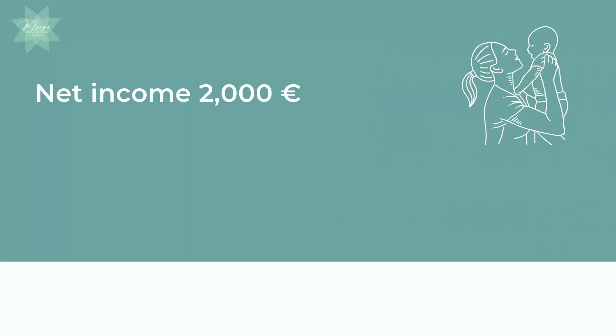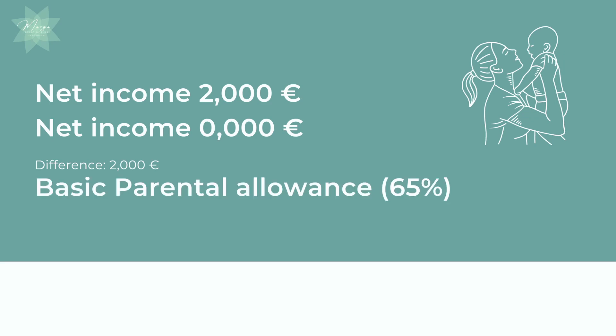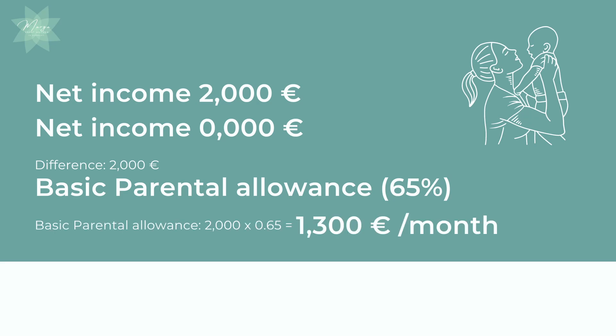Let me explain these two options for basic parental allowance with some examples. In the first example, we have a mother that had an income of 2,000 euros per month before the child's birth. After the child's birth, she stays at home and has no income. She claims basic parental allowance. The net income before is 2,000, the net income after is 0, so the difference is 2,000. The basic parental allowance will be 65% of 2,000, which is 1,300 euros per month.